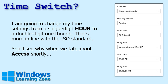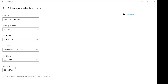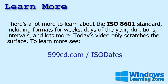I'm going to leave time mostly as it is, but I am going to switch from the single-digit hour to the double-digit hour — that's more in line with the ISO standard. I'm going to change my short time and long time settings to use the double-digit hour format. Today's video is only scratching the surface with dates and times. If you want to learn more about the ISO standard as it applies to days of the year, weeks of the year (1 through 52), durations, time intervals, and all kinds of other stuff, I'll put links to some valuable resources down below.